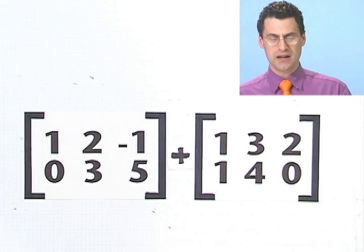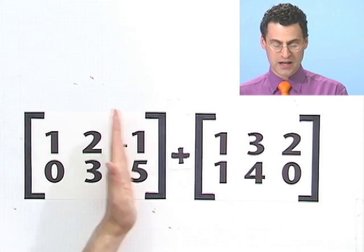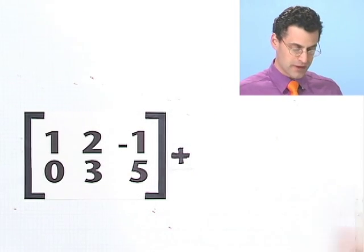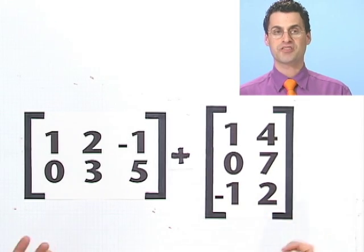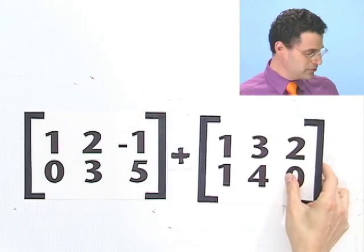here you can see these two things can be added because they're both two by three, right? Two rows, three columns, two rows, three columns. But I could not, for example, add that matrix to this matrix. That's just impossible. There's no way to do that because they're different kinds of objects. There's no way to put them together in a nice way. But this is nice and smooth and silky. You can't help but wanting to add them together.